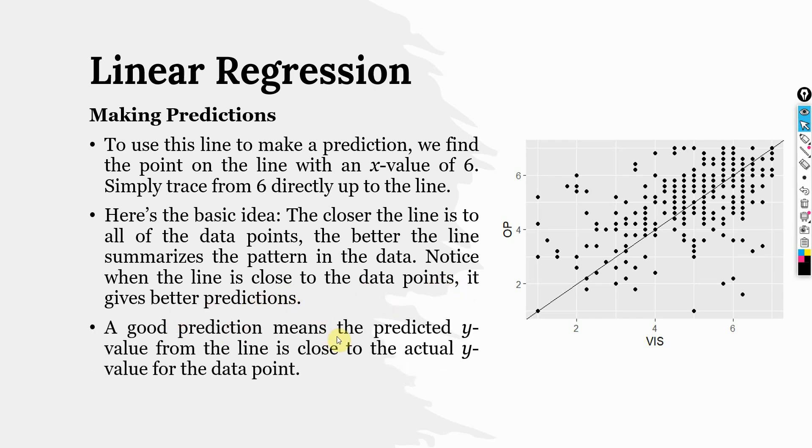A good prediction means the predicted y value from the line is close to the actual y value for the data point. Here your data points are very close to this line and when the score of vision is increasing there is a higher score for OP. So vision can be referred to as a good predictor for organizational performance.